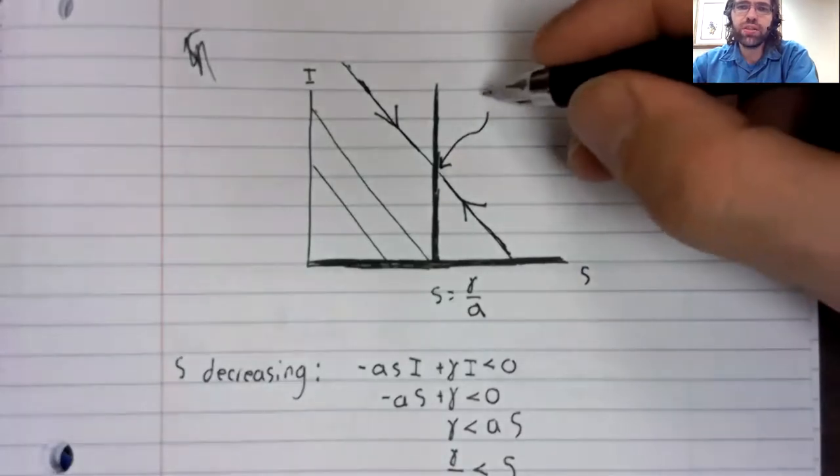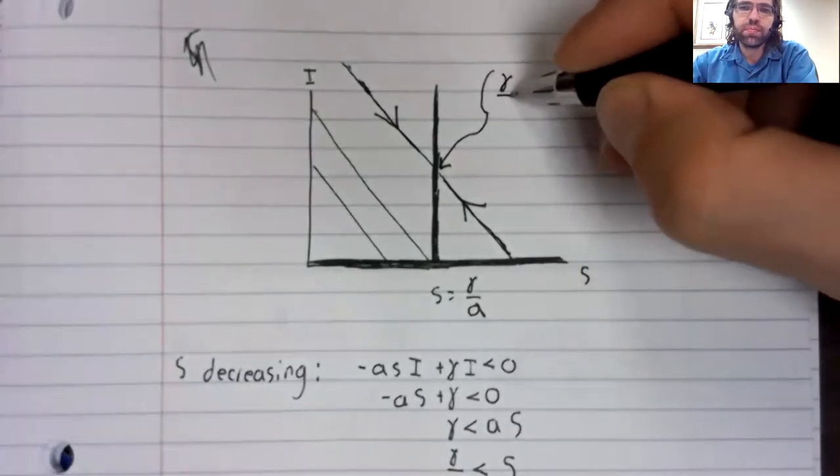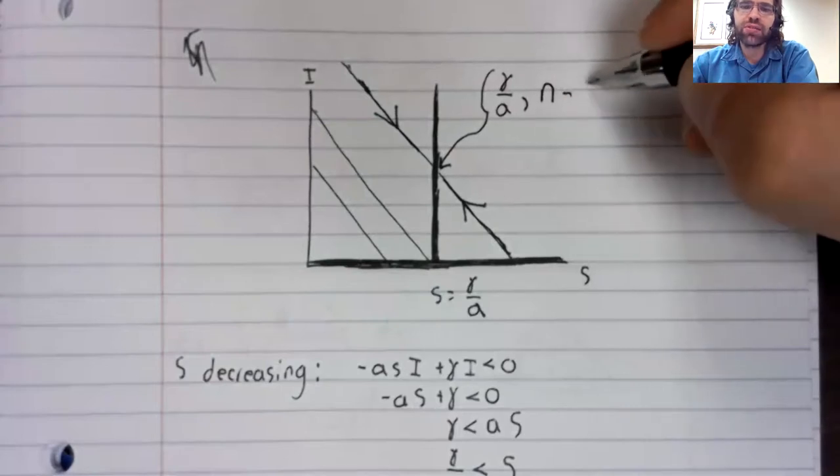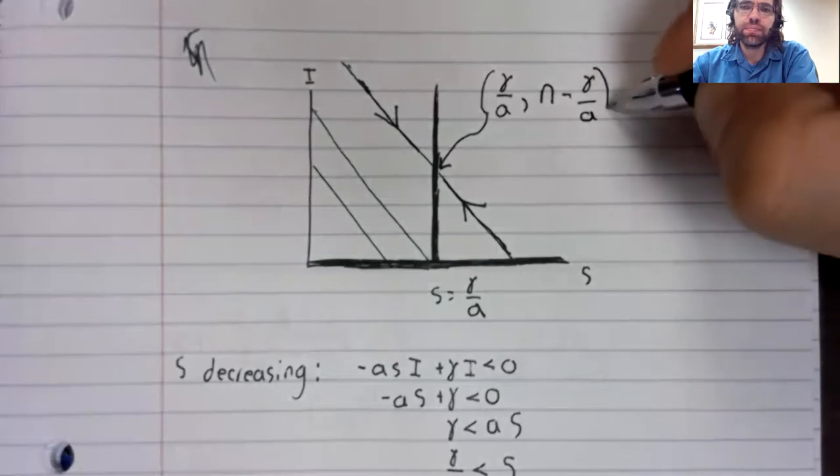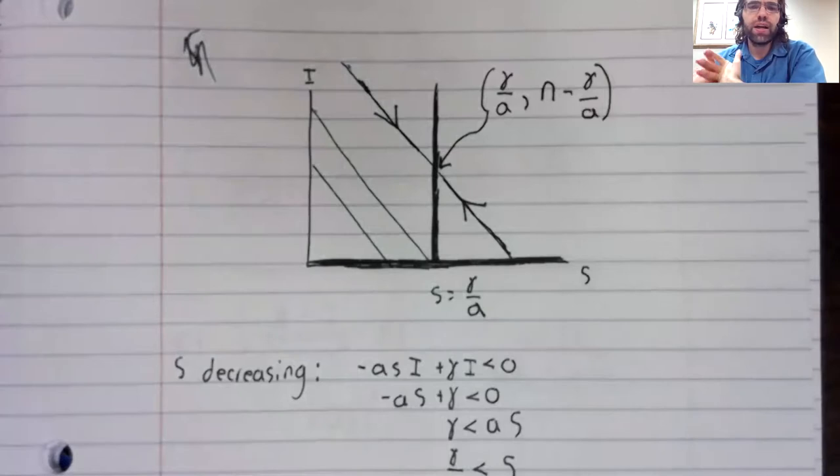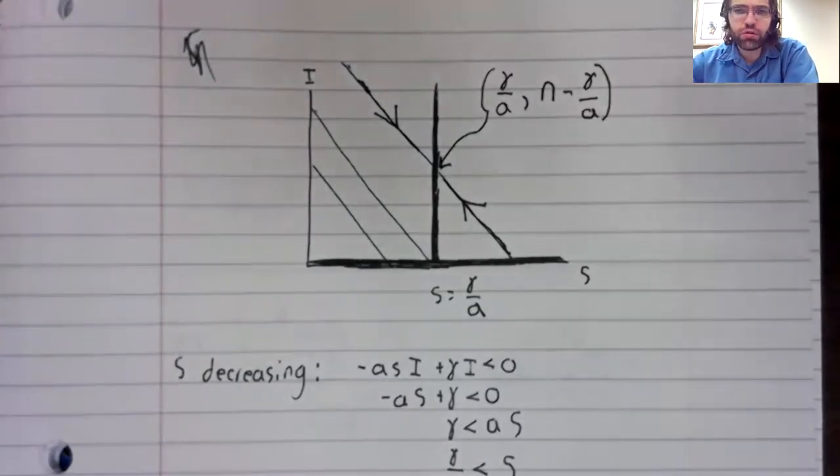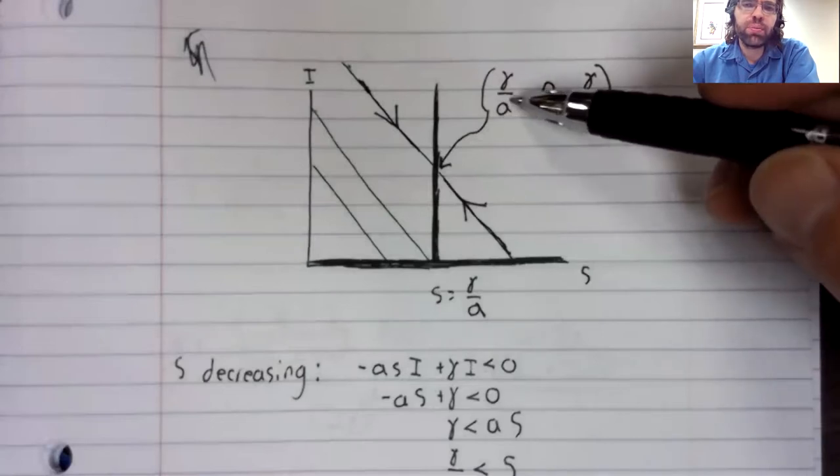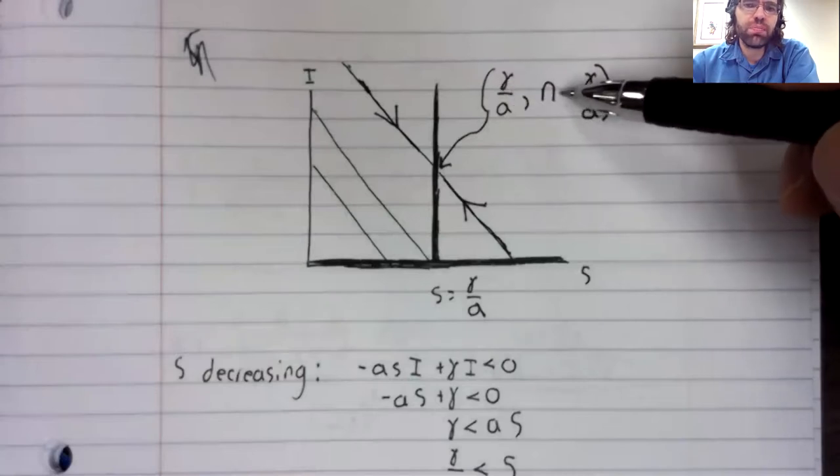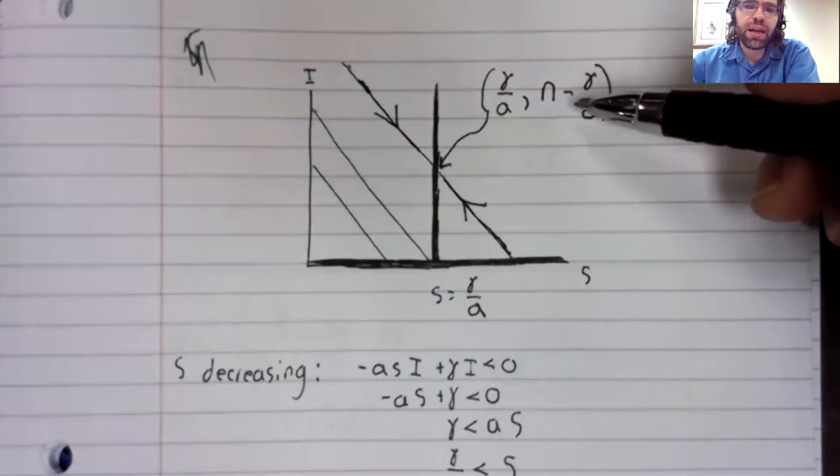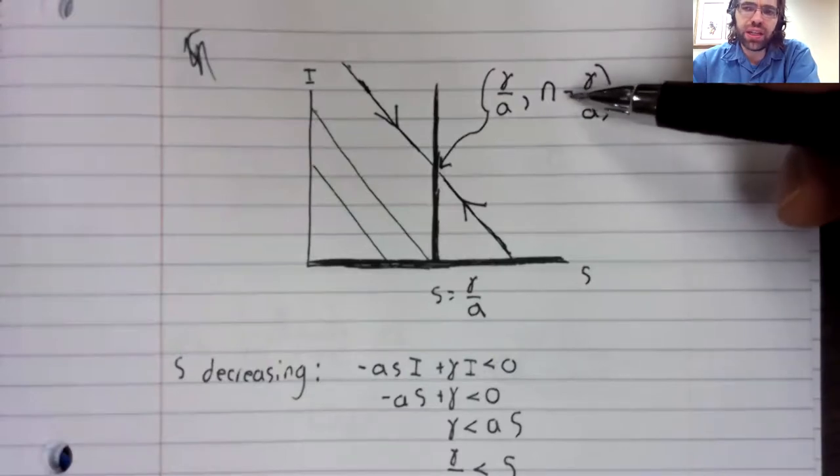What is this point? It's gamma over A. Remember that I plus S equals N. So if S is this, I has to be this. So as time passes, in general, we'll converge to a fixed point. And notice that the number of susceptible people and the number of infected people are both positive here.